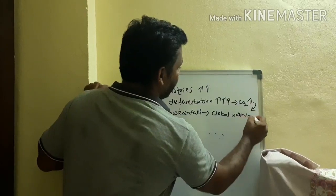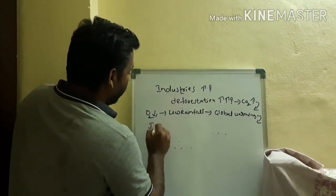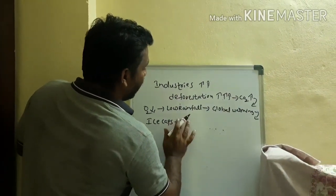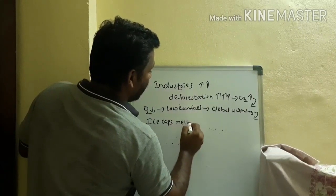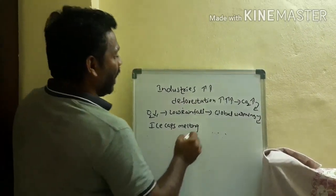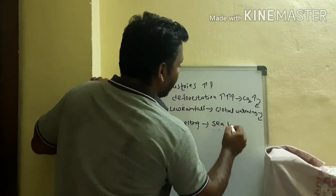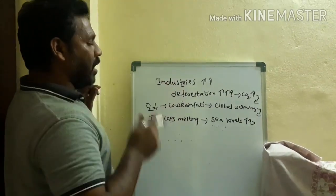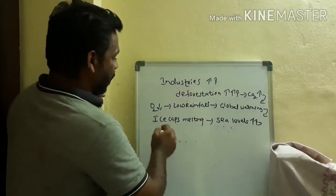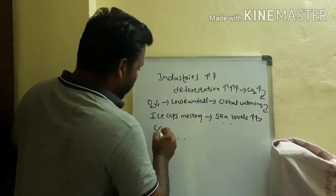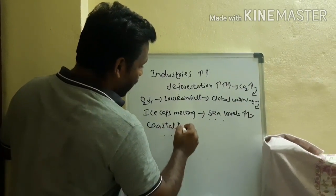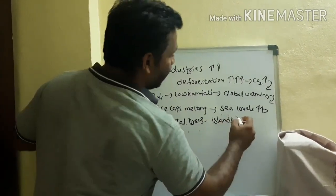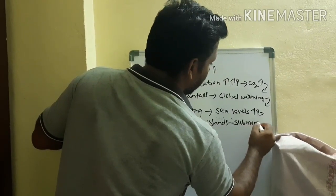Due to this heating and global warming, more and more of the ice caps will be melting. The sea levels will automatically be increasing. When the sea levels increase, what will happen? Those who are living in the coastal areas or near the islands — these areas will be submerged.